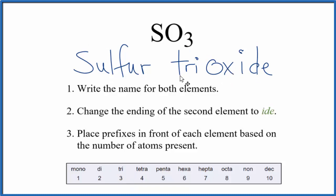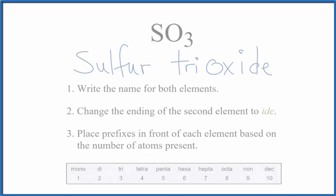If you were given the name and asked to write the formula for sulfur trioxide, you'd know there's just one sulfur and then three oxygen atoms, so you'd write SO3. This is Dr. V with the name for SO3, sulfur trioxide. Thanks for watching.